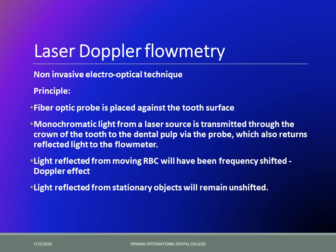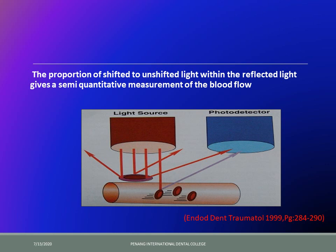The light reflected from moving red blood cells — which keep flowing inside the blood — will show a shift in frequency. This is the Doppler effect. Light reflected from stationary objects such as nerve fibers remains unshifted. The comparison between light reflected from stationary and moving cells determines whether the tooth is vital or not, because if RBCs are flowing in circulation, the tooth is vital.